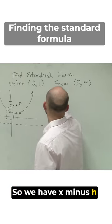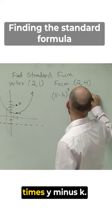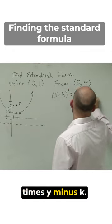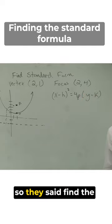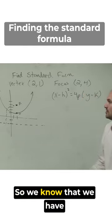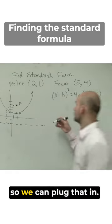We have x minus h squared equals 4p times y minus k. So they said find the standard form. We know that we have our vertex, which is our h and our k, so we can plug that in.